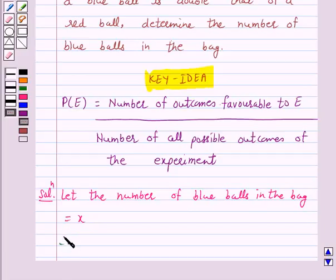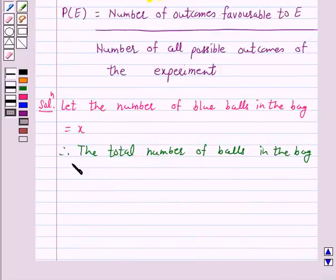Therefore, the total number of balls in the bag is equal to 5 plus X because there are 5 red balls in the bag. That is, the number of all possible outcomes is equal to 5 plus X.